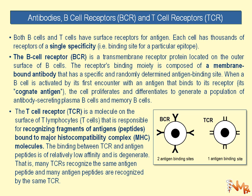The T-cell receptor is a molecule on the surface of T-lymphocytes responsible for recognizing fragments of antigen — peptides or epitopes — that are bound to major histocompatibility complex molecules. The T-cell recognizes these fragments only when they are presented on antigen-presenting cells on their MHC. The binding between TCR and antigen peptides is of relatively low affinity and is degenerate — meaning many TCRs recognize the same antigen peptide, and many antigen peptides are recognized by the same TCR.